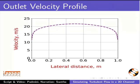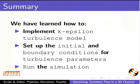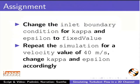The slide shows the velocity profile at the channel exit. With this, we have come to the end of the tutorial. In this tutorial, we learnt to implement the K-Epsilon turbulence model, set up the initial and boundary conditions for turbulence parameters, and run the simulation. As an assignment, change the inlet boundary conditions for Kappa and Epsilon to fixed value. Repeat the simulation for a velocity of 40 meters per second and change Kappa and Epsilon accordingly.